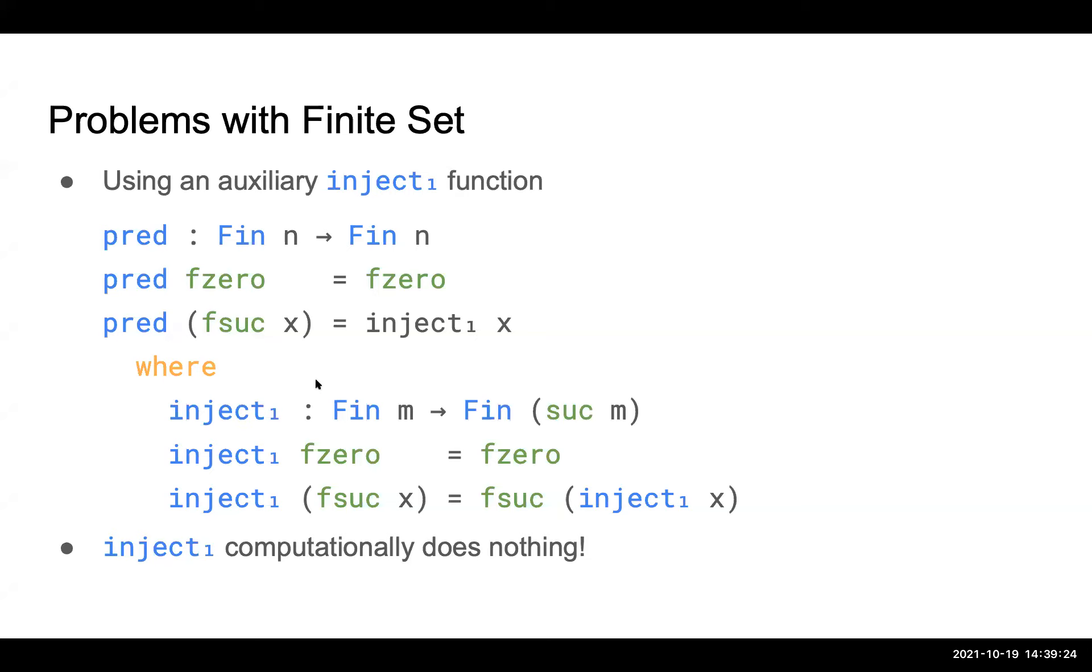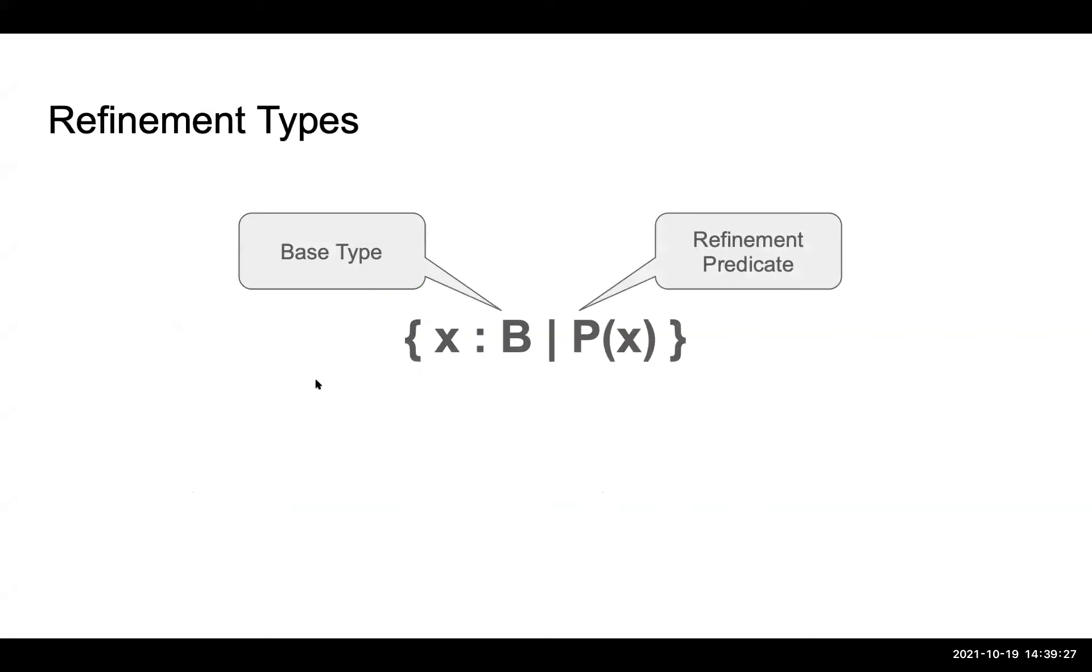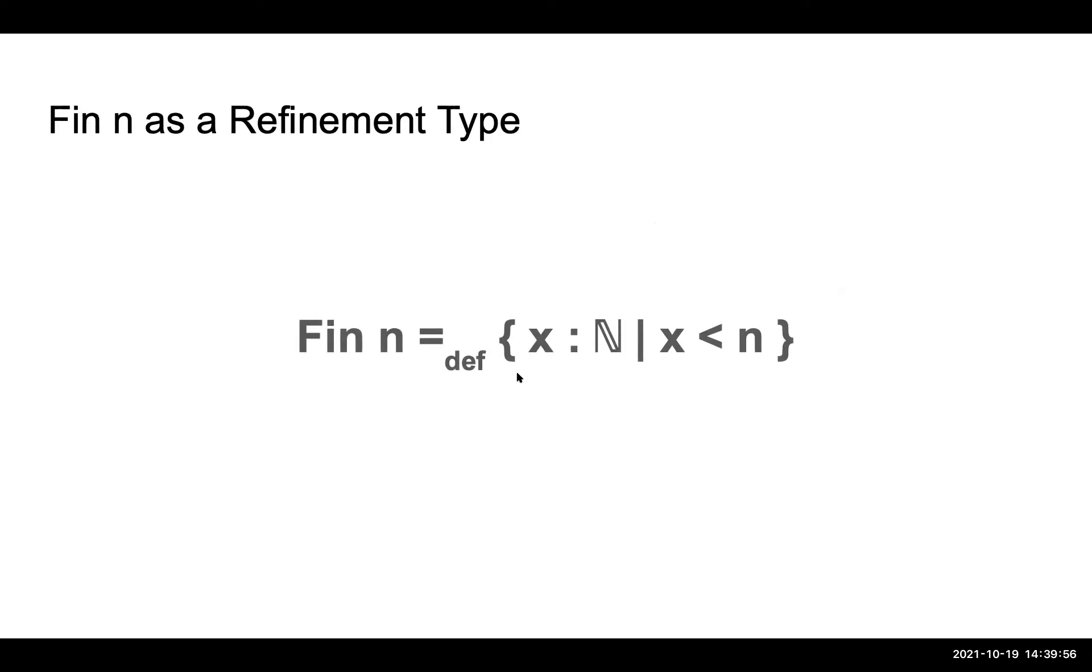That's the reason we turn to an alternative type discipline called refinement types. So refinement types have been around for a while, so I don't think I need to go into very deep here. So basically, it's a type written as this set comprehension notation. You got your plain base type, which kind of gives a coarse-grained shape of the value being defined. And then you have the refinement predicate, which is used to further constrain the value being defined. And with this refinement type at hand, we can define our Fin n as this new definition. So it's just a natural number paired with a predicate that it's less than n.